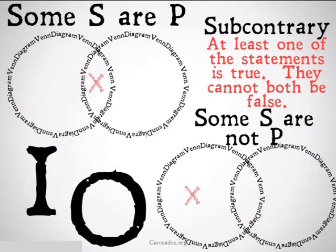It should be clear that if one of these statements is false, the other can't be false. Why? Because we assume the existence of the subject. At least some S exists, and that S either has to be a P or not be a P.